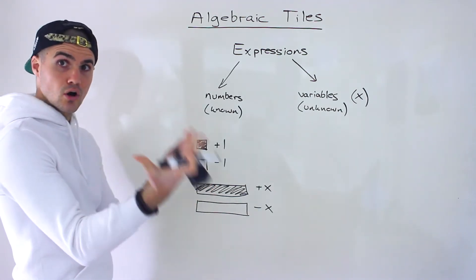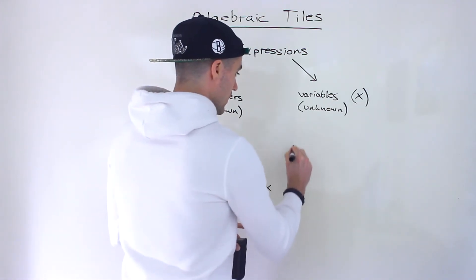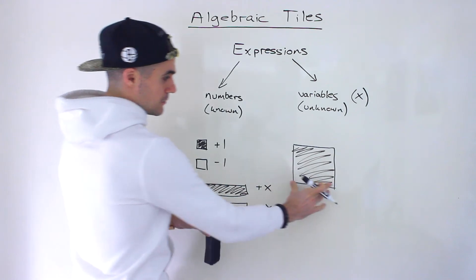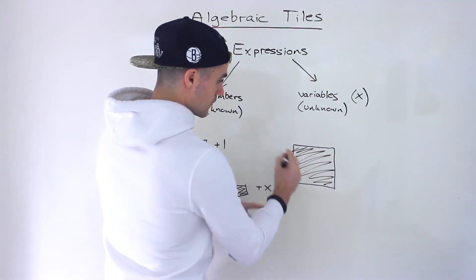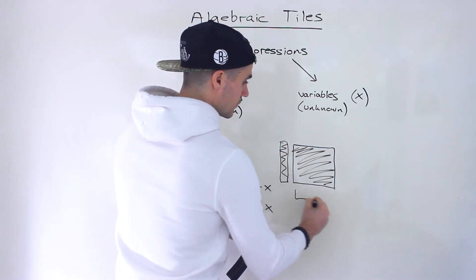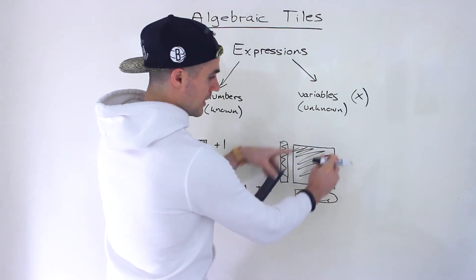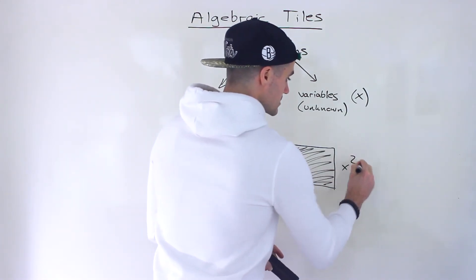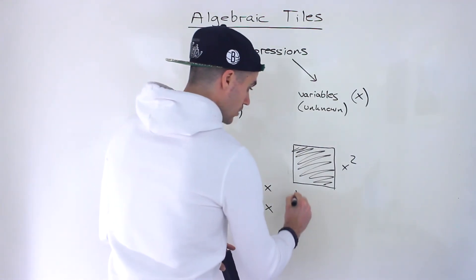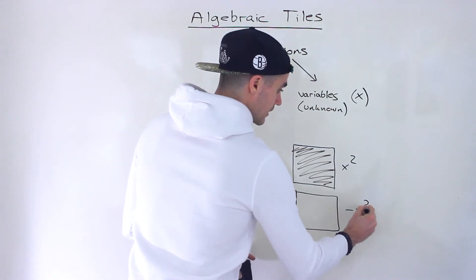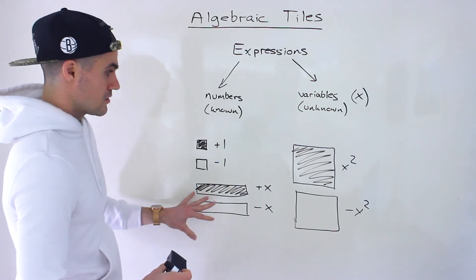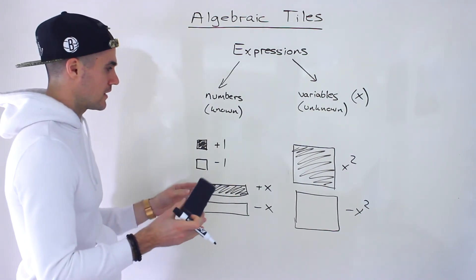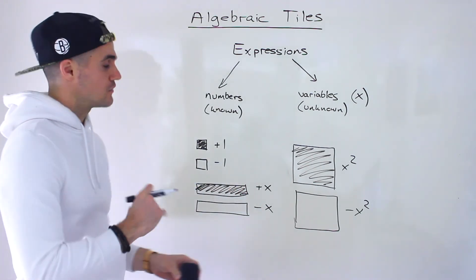Finally there's a large square. If it's colored in, it represents x times x — because this large square is like two of those rectangles combined, so it's like multiplying them together — making it plus x squared. And as you might guess, a hollow large square is negative x squared. Those are the six shapes we're going to be dealing with over the next couple of videos. It's kind of strange, but if it's covered by your teacher we've got to go through it.